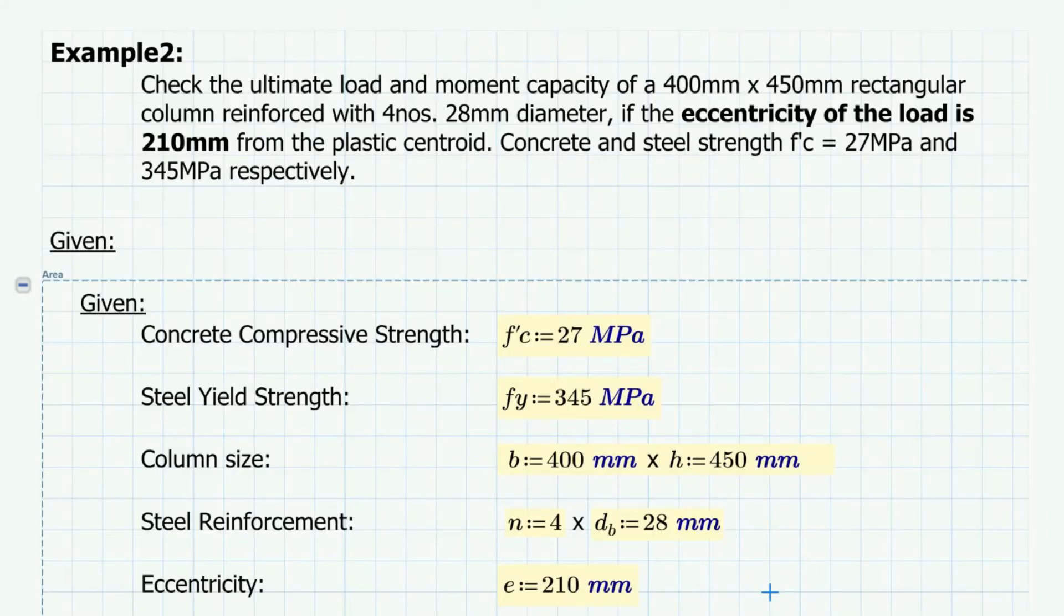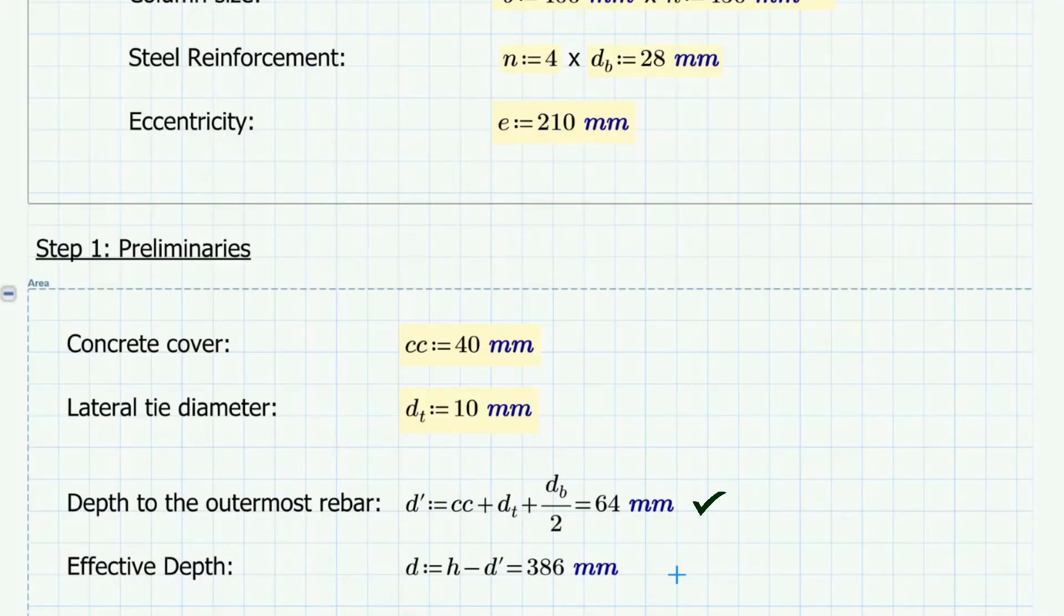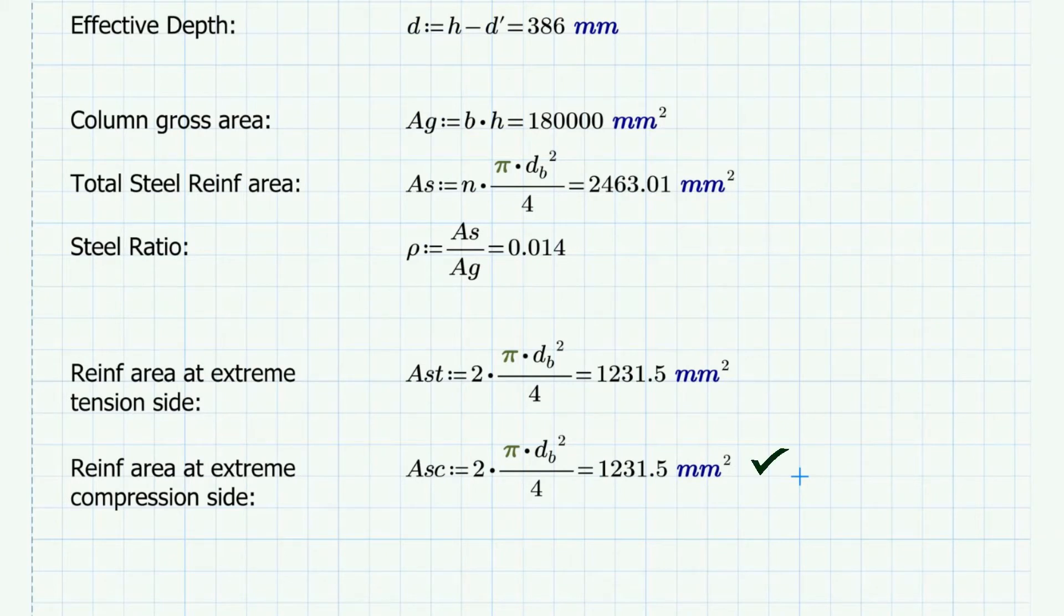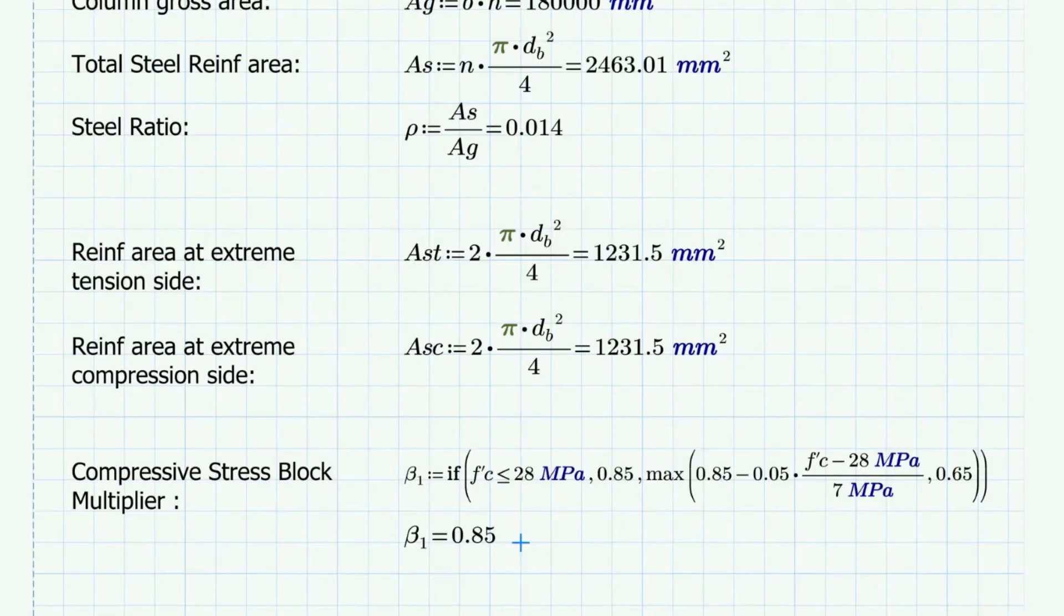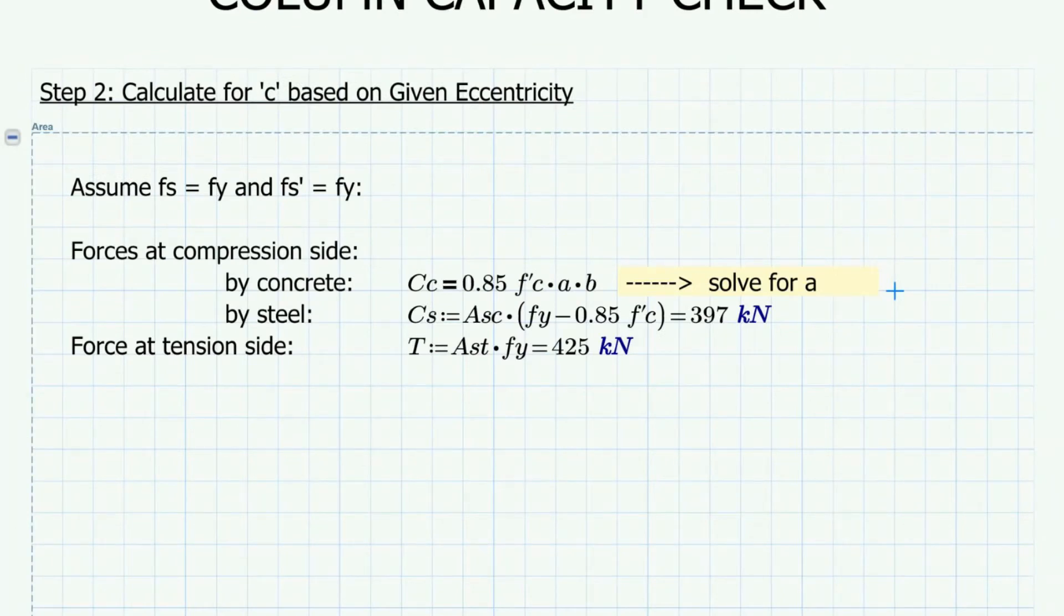Let's look at another example. This time, the eccentricity is given and we need to find the actual load capacity and the bending moment. We first assume that Fs and Fs' are equal to Fy. Then we calculate for the forces by steel at compression side and at tension side. The compression force by concrete we need to solve for the value of A.